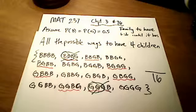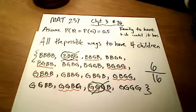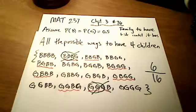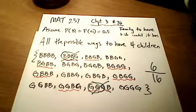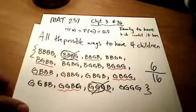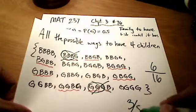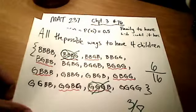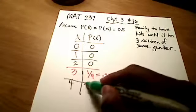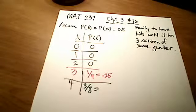That leaves me with six out of 16. Simplifying by dividing both by two, I get a probability of three over eight. On WebAssign you can write 3/8 or its decimal equivalent, 0.375.